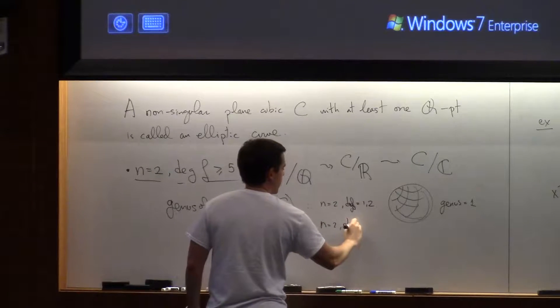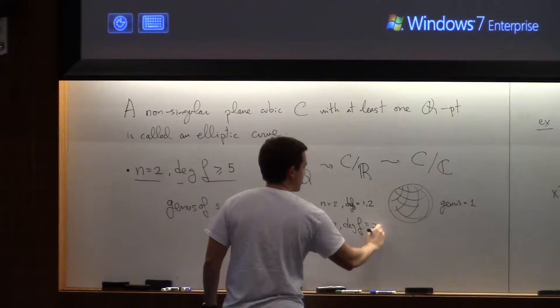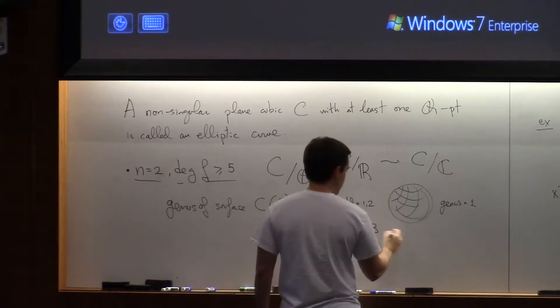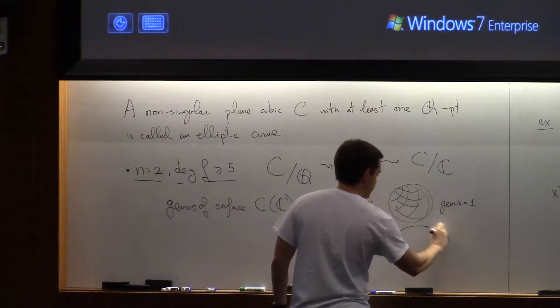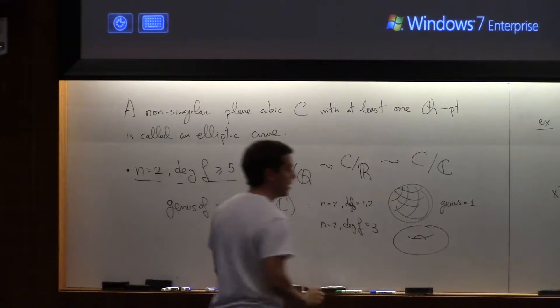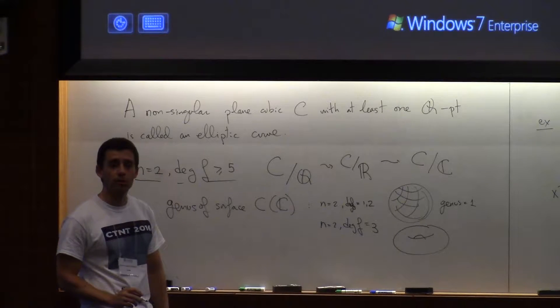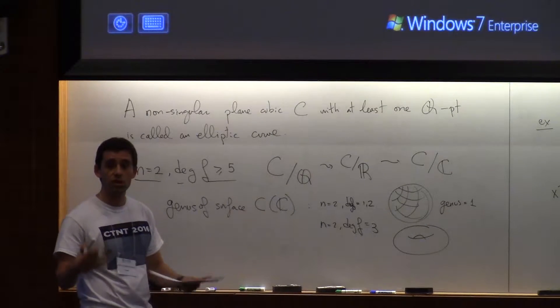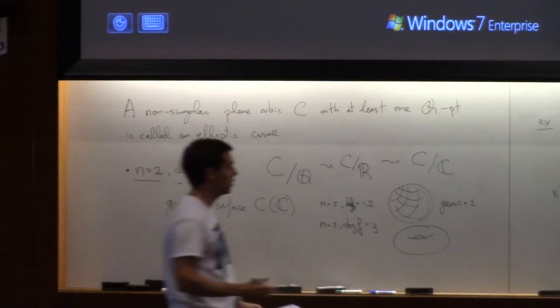When the degree of f is 3 or 4, what you get is elliptic curves. An elliptic curve over complex numbers is actually a torus, it has one hole.